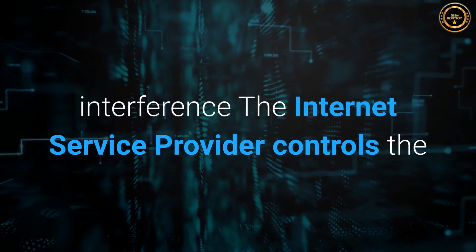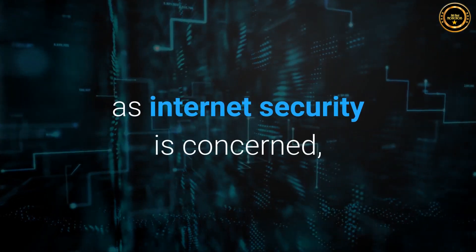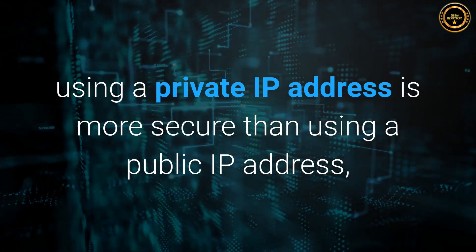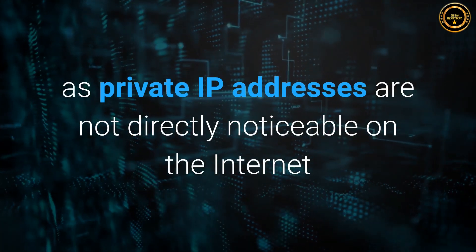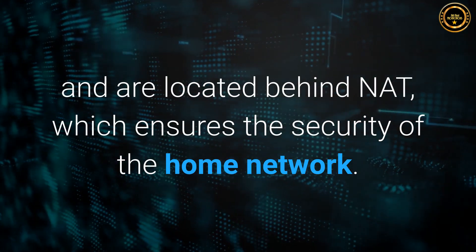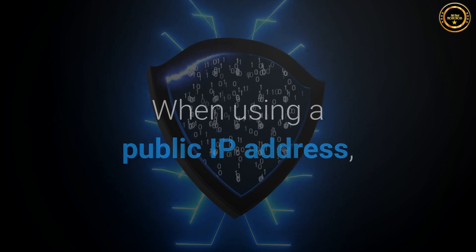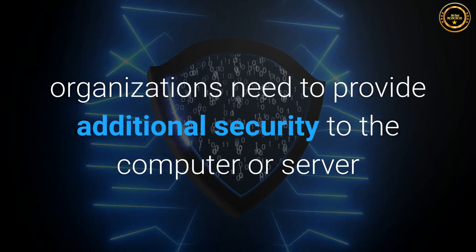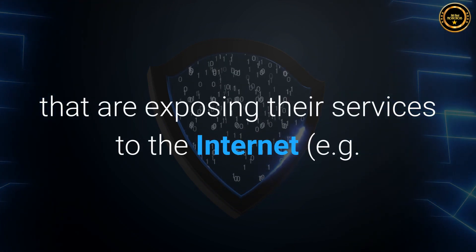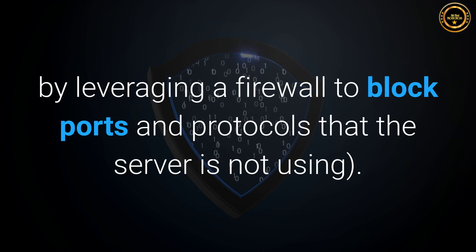The Internet Service Provider controls data transfers using a public IP address. As far as Internet security is concerned, using a private IP address is more secure than using a public IP address, as private IP addresses are not directly visible on the Internet and are located behind NAT, which ensures the security of the home network. When using a public IP address, organizations need to provide additional security — for example, by leveraging a firewall to block ports and protocols that the server is not using.